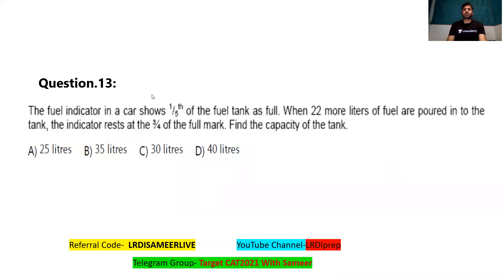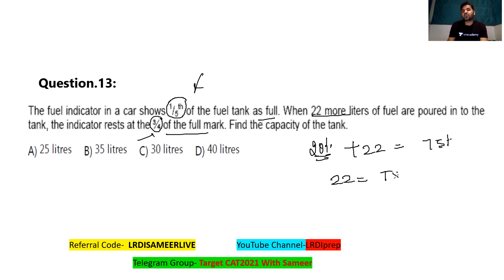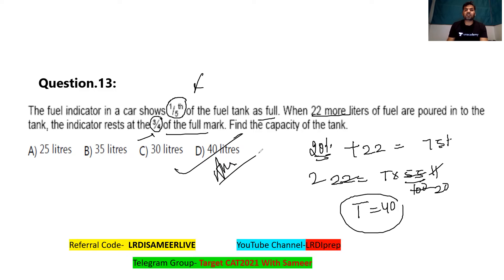Question number 13: a fuel indicator shows one-fifth of the tank as full. When 22 more litres are poured in, the indicator rests at three-fourths. So 22 litres represents 75% − 20% = 55% of the total capacity. Since 22 = 55% of total, total capacity = 22 × (100/55) = 40 litres. Option C is the correct answer.